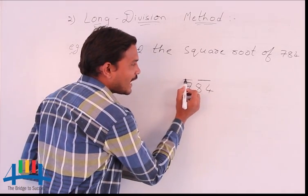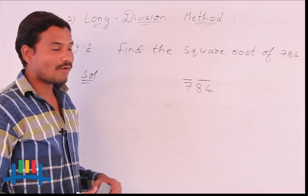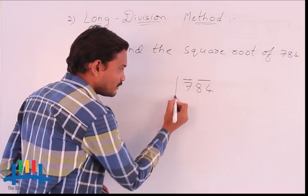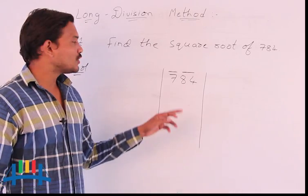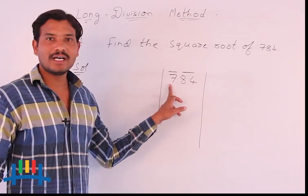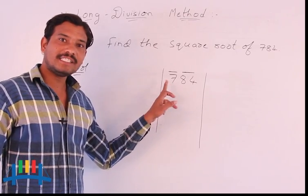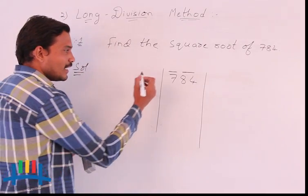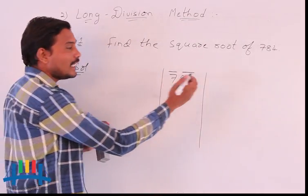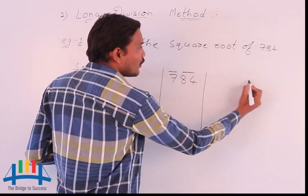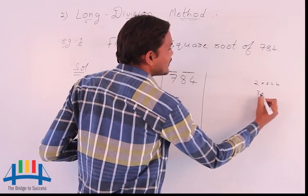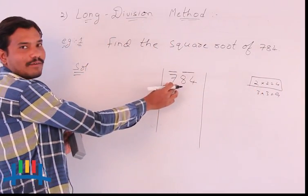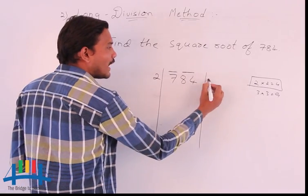After grouping into 2-digit periods, I will start dividing. Looking at the first period, we have 7. We think of the larger number whose square is equal to or just less than the first period. Here, 2 times 2 is 4 and 3 times 3 is 9. Since 4 is less than 7, we consider 2 times 2, which is 4. We write 2 as the quotient, and subtract: 7 minus 4 is 3.